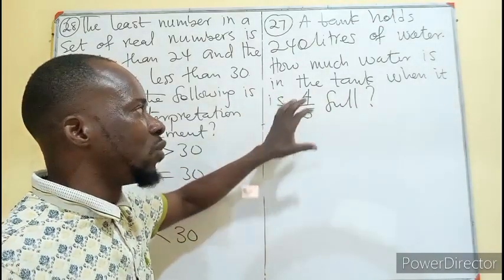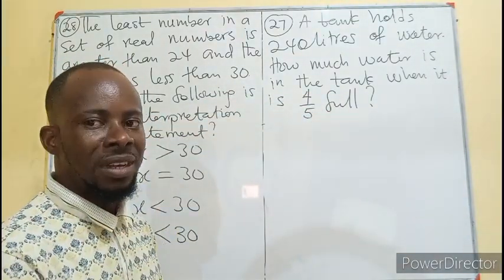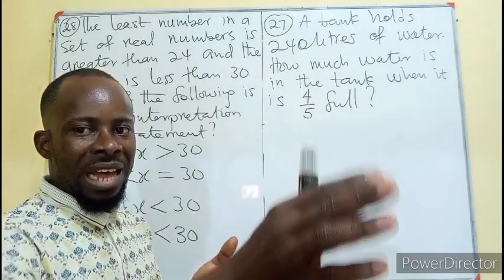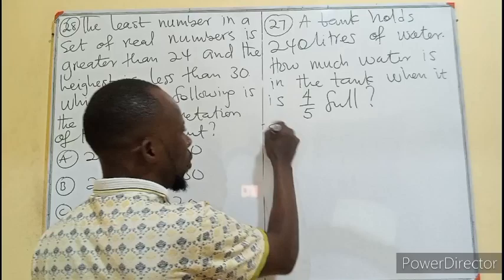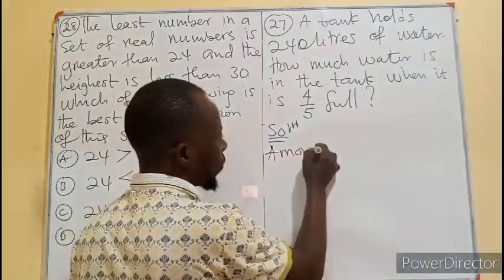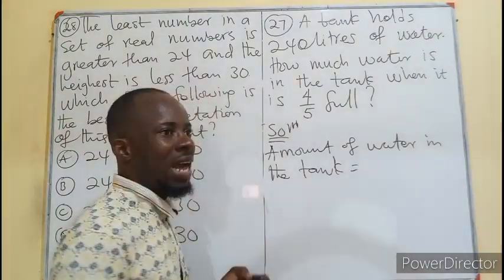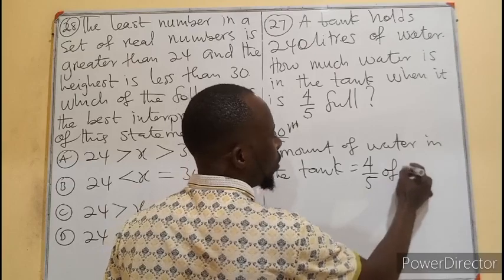We are looking for how much water is in the tank. If 1/5 is the empty space, then 4/5 will be the water. So what I'm looking for is the amount of water, which is 4/5 of 240 liters.